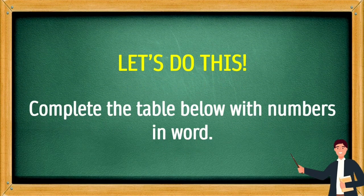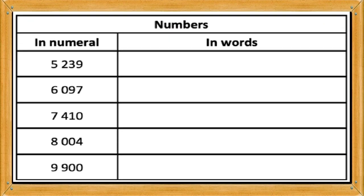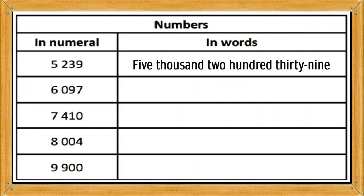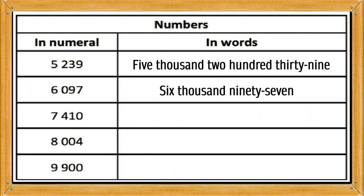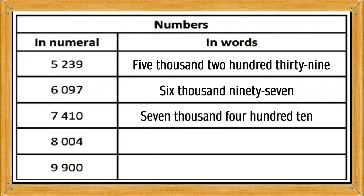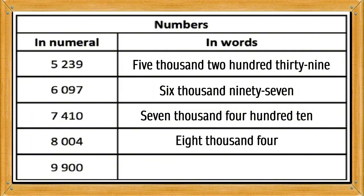Let's do this. Complete the table below with numbers in words: 5,239 — 6,097 — 7,410 — 8,004 — 9,900.